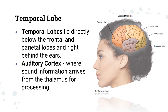Now let's talk about the temporal lobe. Its main function is primarily processing sound information that arrives from the thalamus. Some research says it is not only involved with sounds, but also involved in identifying objects, cooperating with vision — which we will learn more about when we get to that topic.